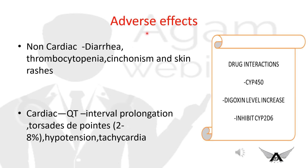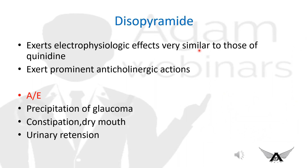Quinidine adverse effects — non-cardiac: diarrhea, thrombocytopenia, cinchonism, and skin rashes. Cardiac adverse effects: marked QT interval prolongation and torsades de pointes (TdP), a specific type of polymorphic ventricular tachycardia that can lead to sudden cardiac death, as well as hypotension and tachycardia. Drug interactions: metabolized by cytochrome P450, increases digoxin levels, causes cardiac depression with beta blockers, and inhibits cytochrome 2D6.